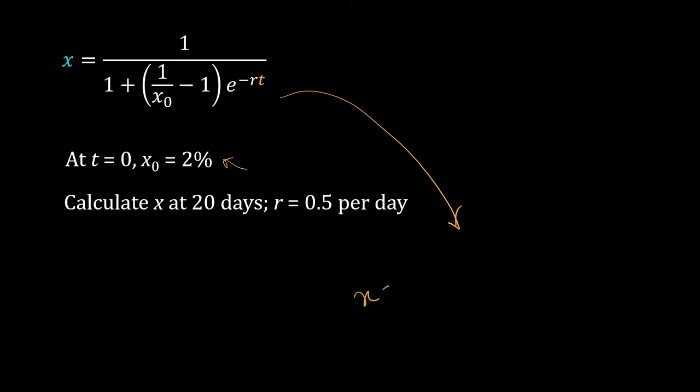So by plugging the numerical value, I get the following: 1/(1 + (1/x₀ - 1)e^(-rt)). x₀ is 2%, that means 0.02, minus 1, times e^(-r)—r is 0.5—times t, t is 20. I have already done the calculation.